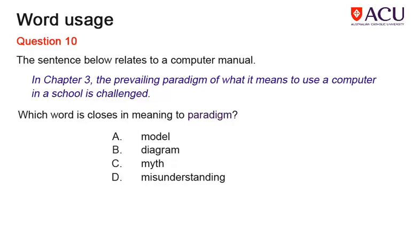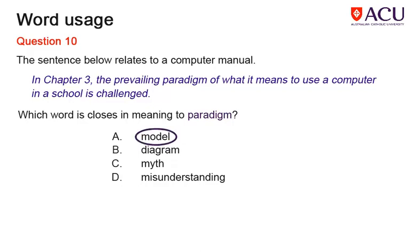Question 10 from the July 2017 practice test asks you to identify the word closest in meaning to the word 'paradigm' so that it fits in the sentence and the meaning is retained. The sentence relates to a computer manual used in a school. One strategy is to choose your answer and check it in context. All selections are nouns, so grammatically they can all follow the adjective 'prevailing'. However, 'model' fits, as the alternatives don't really make sense in the context of an instructional text like a computer manual. So the answer is A. Checking all options can be an alternative strategy if you are not sure.